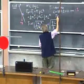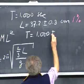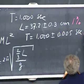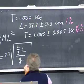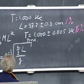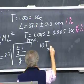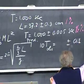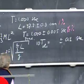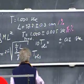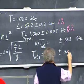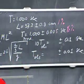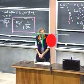We'll make ten oscillations to improve accuracy. My reaction time is about a tenth of a second, so timing ten oscillations and dividing by ten gives a period uncertainty of 0.01 seconds. Let's see how close we get to 1.0 seconds.